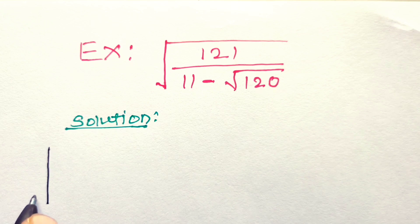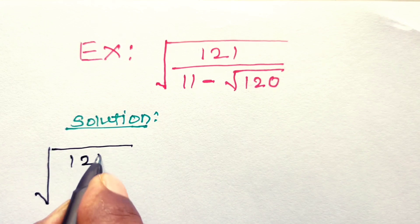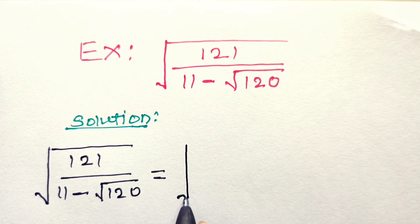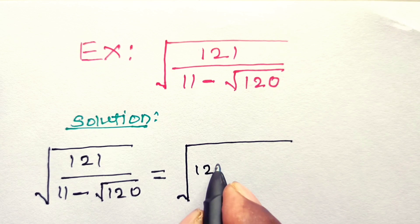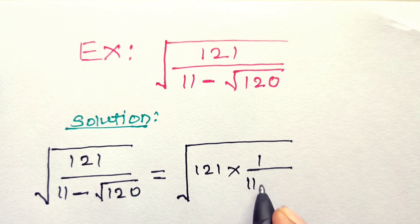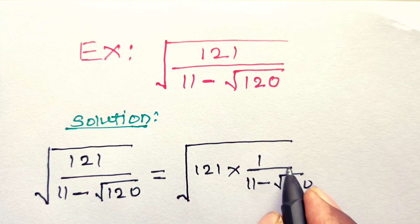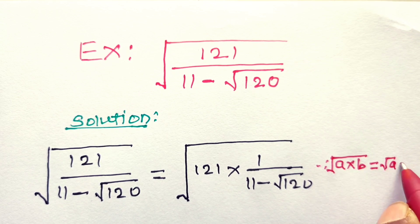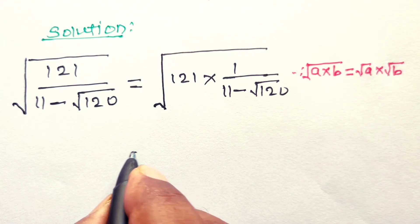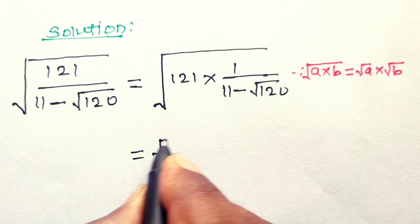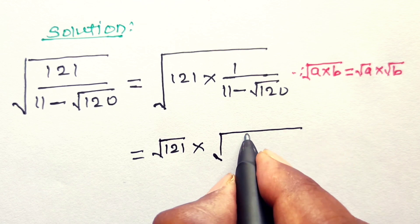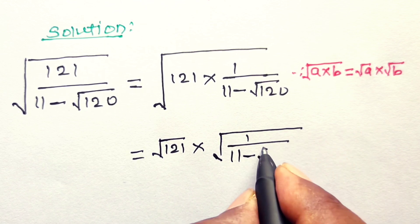Square root of 121 divided by 11 minus square root of 120. This can be written as square root of 121 into 1 upon (11 minus square root of 120). Since we know that square root of (a·b) equals square root of a into square root of b, we apply this formula here: square root of 121 into square root of 1 upon (11 minus square root of 120).